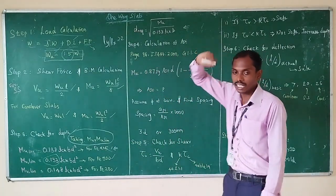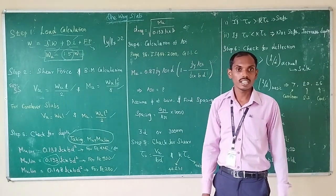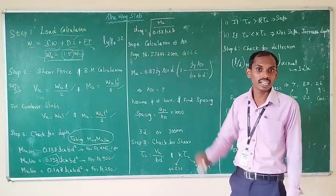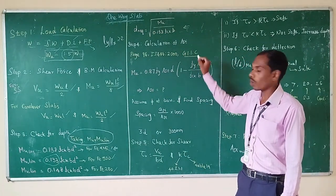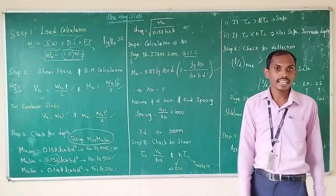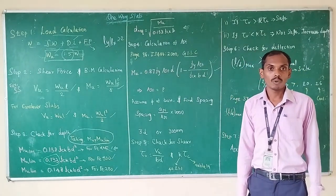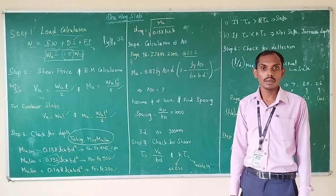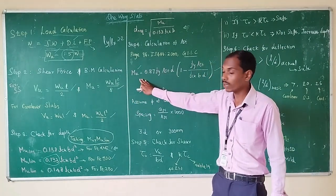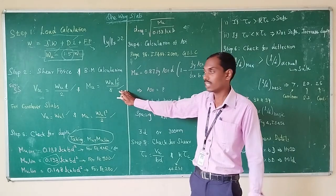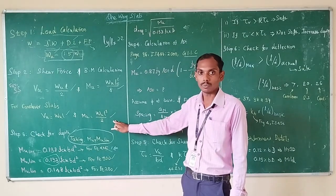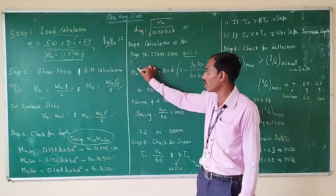The next step is to calculate the value of AST (area of steel for the slab). This formula is based on clause G-1.1 of IS 456. The formula is: MU = 0.87 × fy × AST × d × (1 − (fy × AST) / (fck × b × d)). Here, MU is the ultimate moment based on the type of slab — WL²/8 for simply supported, WL²/2 for cantilever. Substitute the appropriate value of MU to find AST.